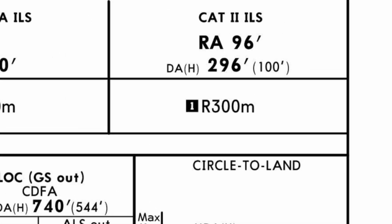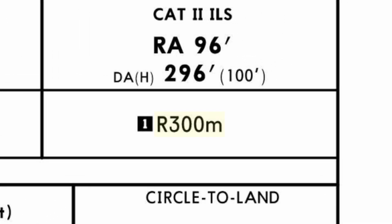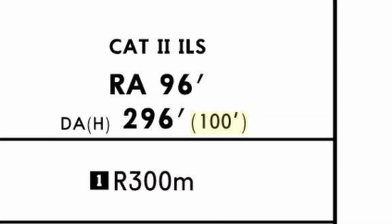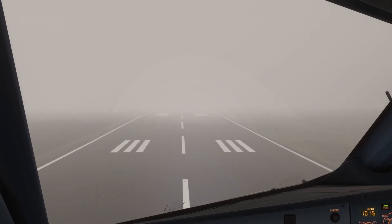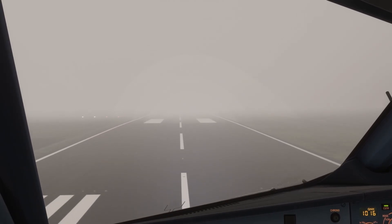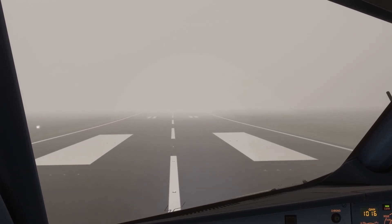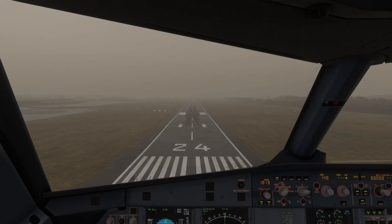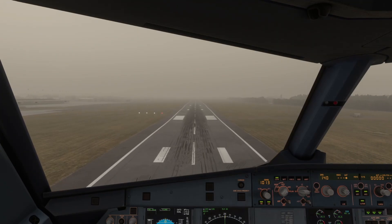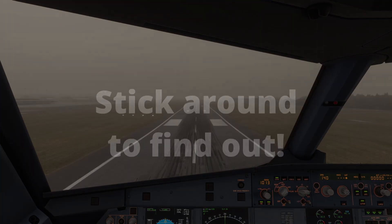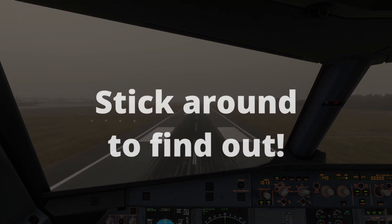Unlike CAT 1, CAT 2 has a minimum RVR specification of 300 meters and generally has a decision height of 100 feet. CAT 2 landings are normally flown as autoland, but can be landed manually depending on airline procedures. CAT 2 operations are also subject to additional certifications, but we'll get to that later.